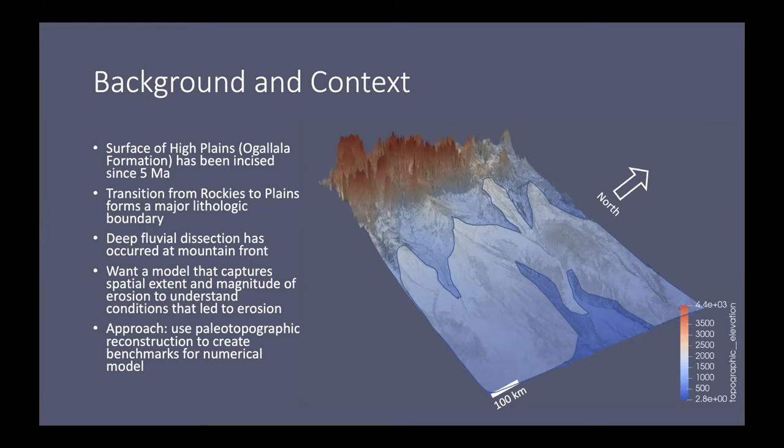And what you can see from just a cursory study of this DEM is that incision has really been focused around the mountain front. Streams have carved deeply below the Ogallala in that location. And the amount of material that's been eroded seems to attenuate quite rapidly as you move east. And so I'm interested in understanding why incision into this surface occurred in the style that it did. So when I say style, I mean both the magnitude of incision as well as the spatial extent. So why is it focused at the mountain front?